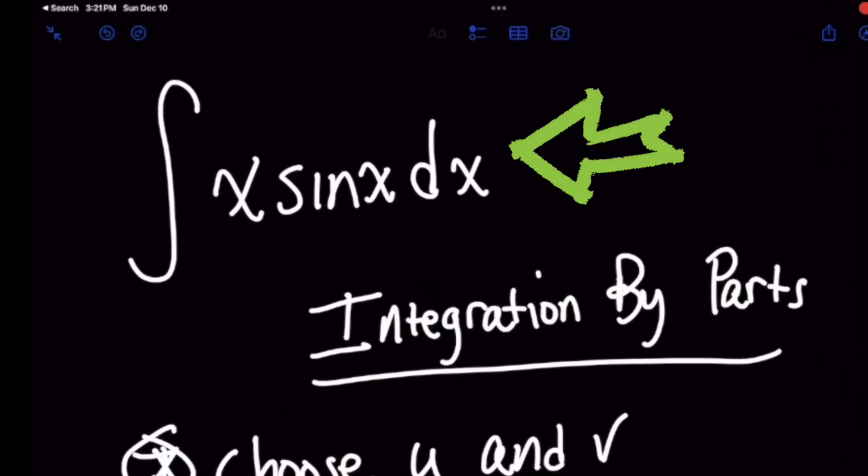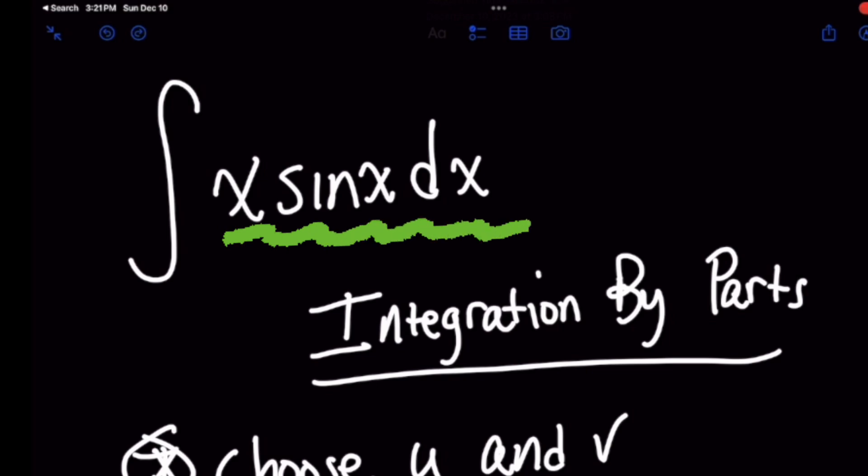How do you know what you should choose here for your u and dv terms when you have the integral of x sine of x dx? I remember this was very frustrating for me in college because sometimes I would make the wrong choice.